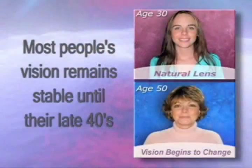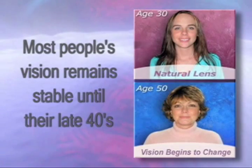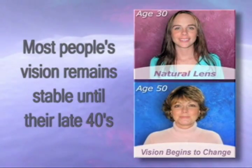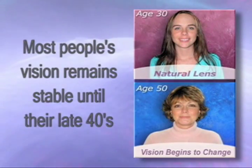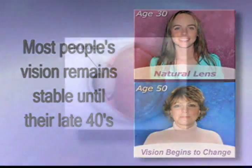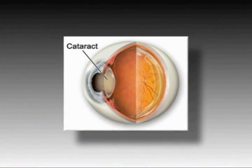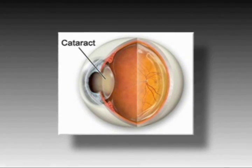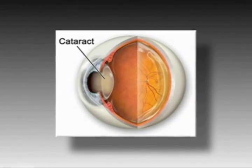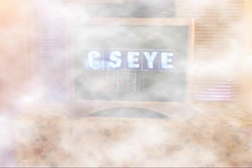As we get older, however, our natural lens begins to enlarge and harden, resulting in the gradual loss of accommodation. This is followed by the eventual formation of a cataract, where your natural lens becomes cloudy, preventing a clear image from forming on the retina.